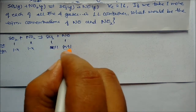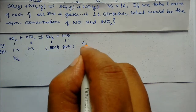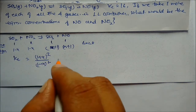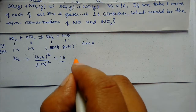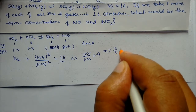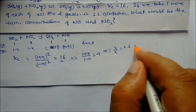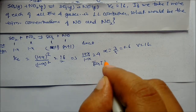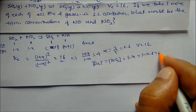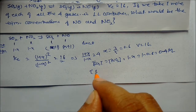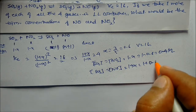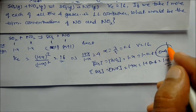Since Δn = 0, Kc = (1 + x)² / (1 − x)² = 16. Solving: (1 + x)/(1 − x) = 4, so x = 0.6. Moles of SO₂ = moles of NO₂ = 1 − 0.6 = 0.4 mol/L. Moles of SO₃ = moles of NO = 1 + 0.6 = 1.6 mol/L. This is our answer.